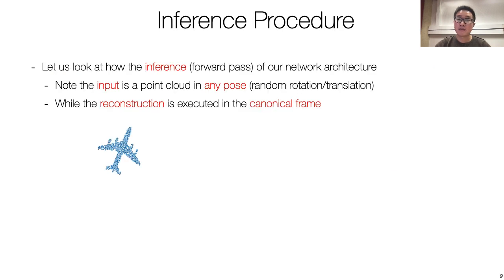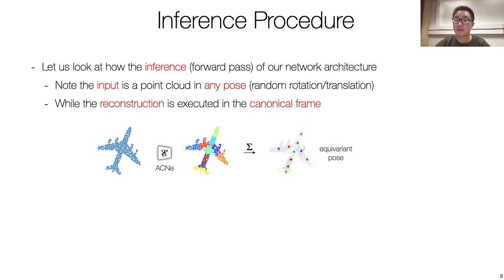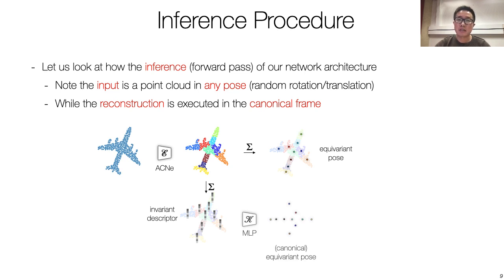Let us now look at the inference procedure. We first feed a point cloud through the ACNE network, which clusters it into capsules. Then, by using these attention weights, we compute the Euclidean average of the positions assigned to the same cluster, resulting in the equivariant pose, and the average of the ACNE features assigned to the same cluster, resulting in the invariant descriptor. We then employ an MLP to convert the invariant descriptor into the canonical pose. As the canonical pose is in one-to-one correspondence with the original pose, Procrustes alignment can be used to compute the transformation that brings the point clouds into the canonical space. Once our representation is in canonical space, we decode the features with an AtlasNet-like architecture to reconstruct the point clouds.